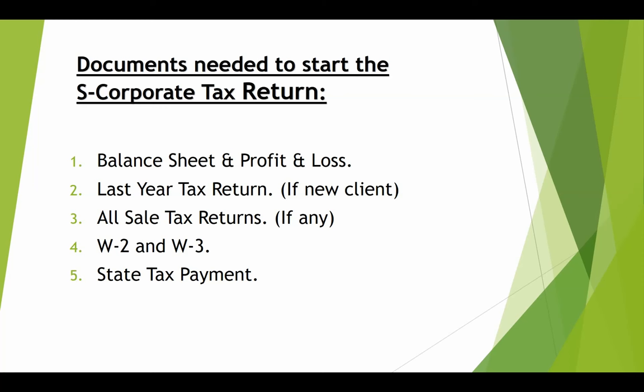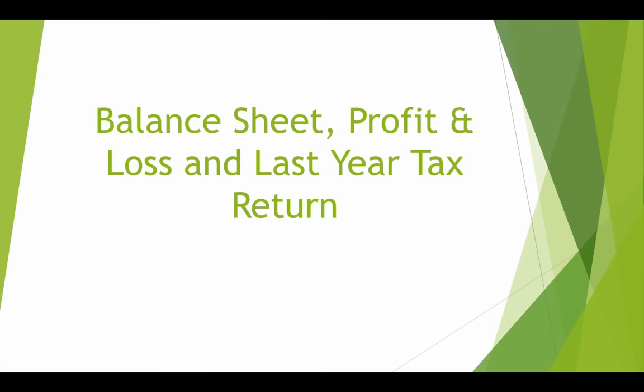Number five: the state tax payment. The IRS lets you deduct this state tax payment on your federal tax return, but when you do the state return, they will not let you deduct it. That's why we need this number — we will add it back on our state tax return. I'll show you how that works for California.